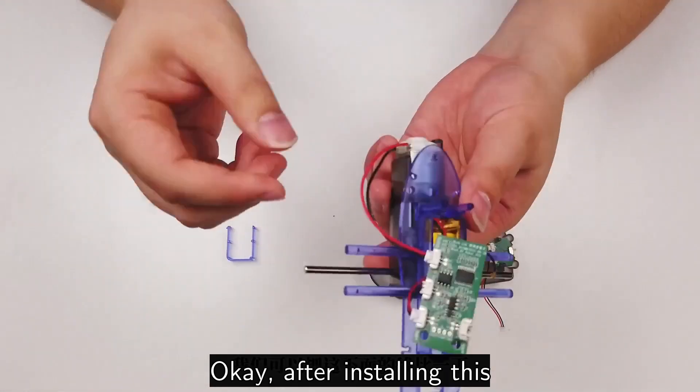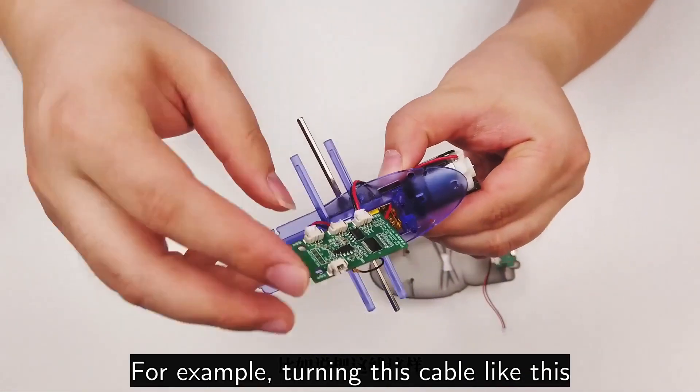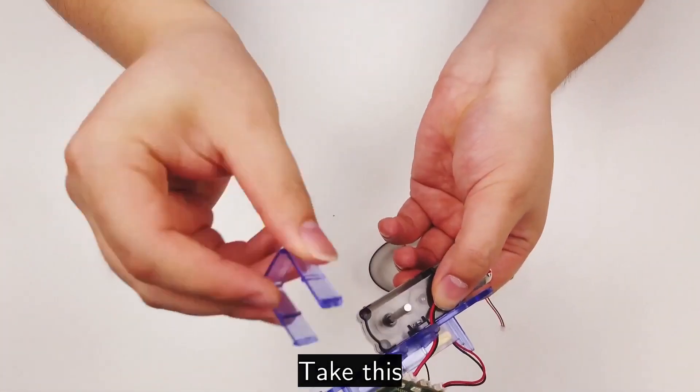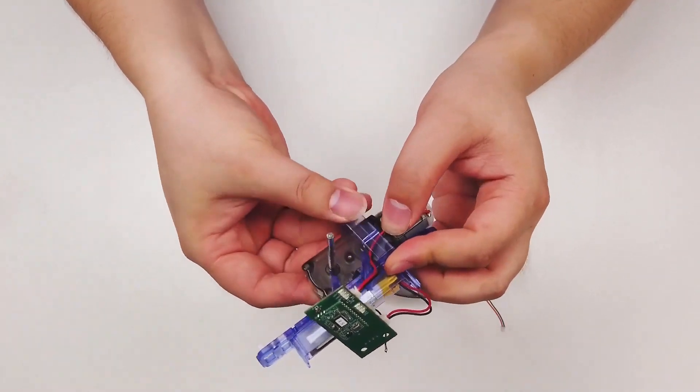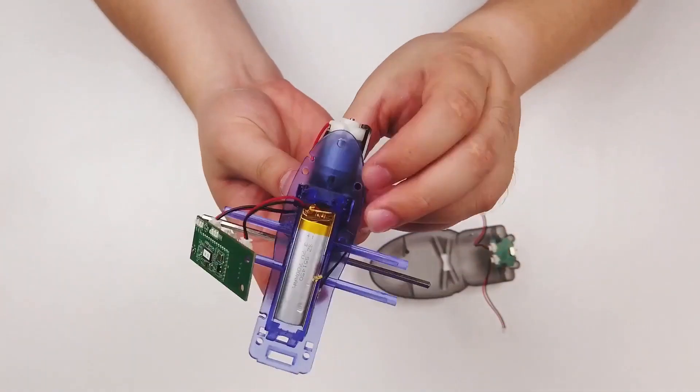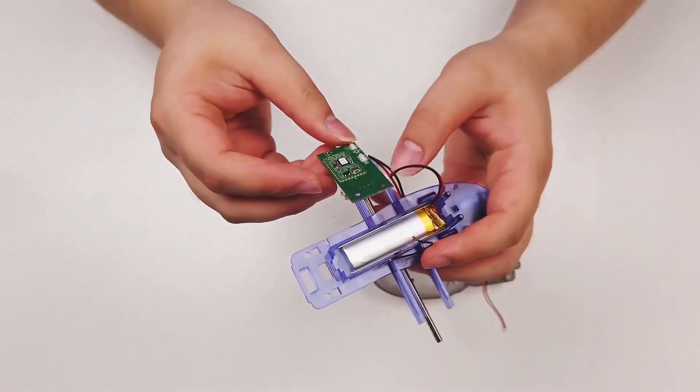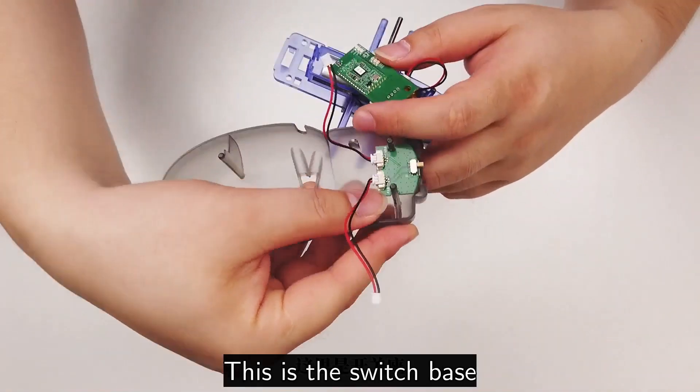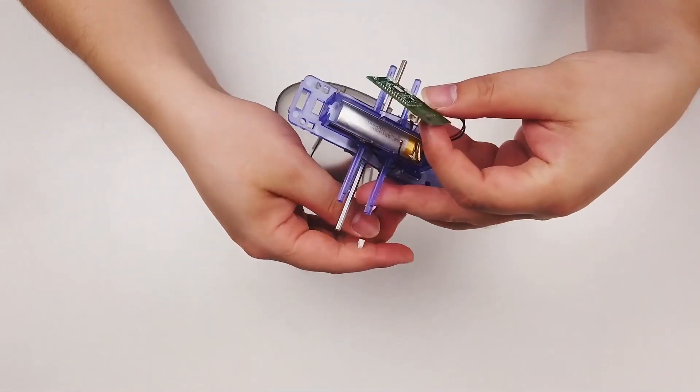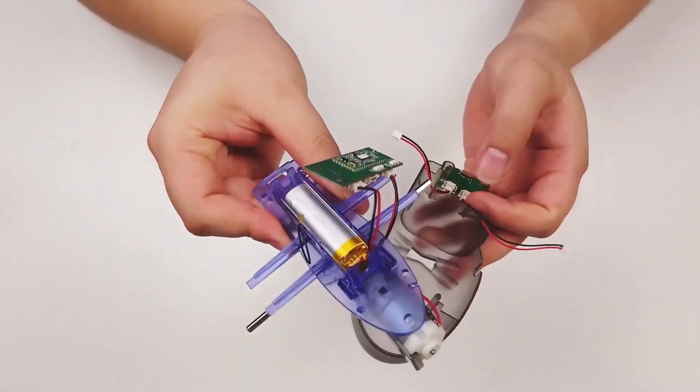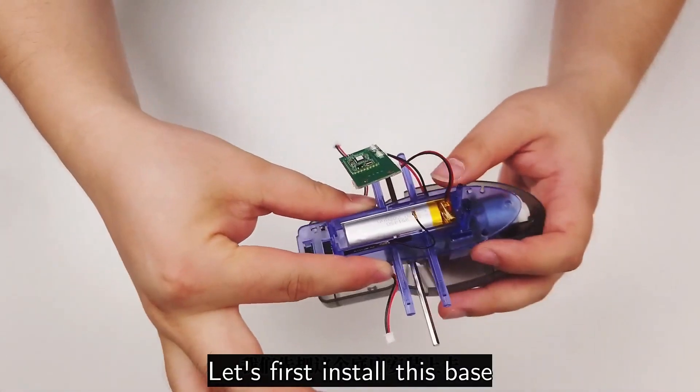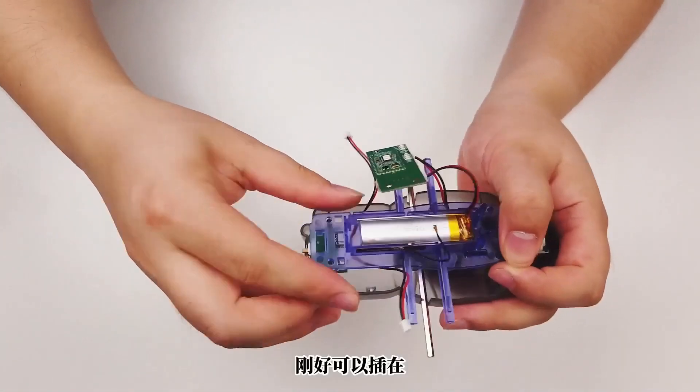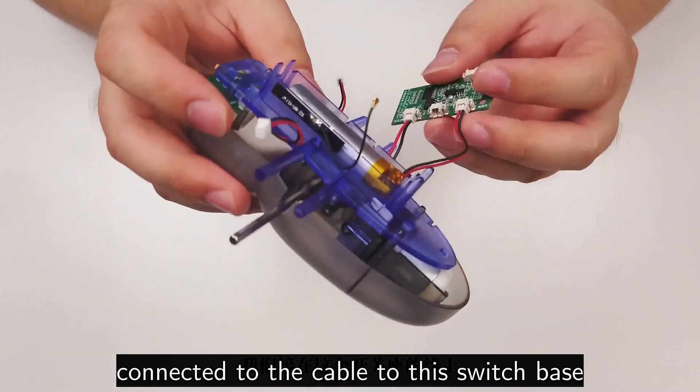After installing this, we can check cables here. Once fixed, take this clamp and clamp this wire. The cover is now installed in place. Next we can see that there are corresponding ports. This is the switch base wire. Let's first install this base. Be sure to lead this line out. There are four fixing holes. It just fits in. This is the switch cable connected to the switch base.